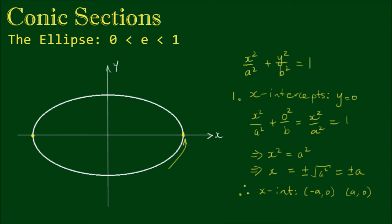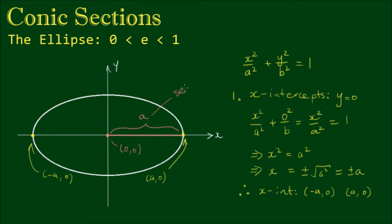So here we have the x-intercept (a, 0) and here we have the x-intercept (-a, 0). Now the distance from the centre to the x-intercepts, which is the length a, is the furthest we will ever get from the centre. We call this the semi-major axis — semi meaning half, and major meaning it is the bigger of the two axes.